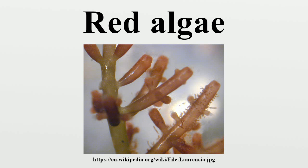Chondrus crispus of Florideophyceae, and Porphyridium purpureum of Porphyridiophyceae. No genome sequences are available for members of the classes Compsopogonophyceae, Rhodellophyceae and Stylonematophyceae.